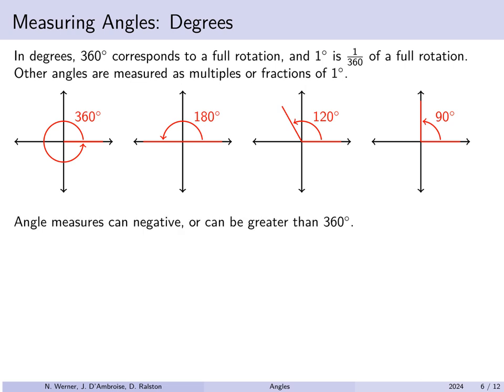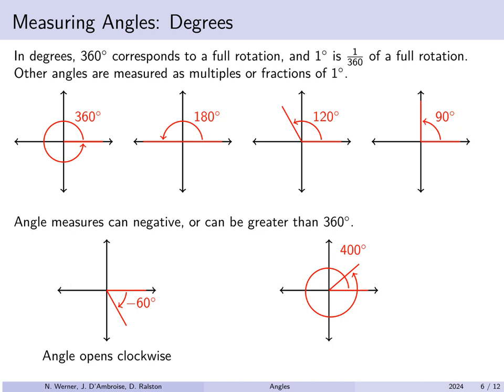Angle measures can also be negative or bigger than 360 degrees. For example, starting from the x-axis and rotating clockwise by 60 degrees gives negative 60 degrees — because the angle opens clockwise it is negative. On the other hand, rotating counterclockwise one complete rotation and then 40 more degrees gives a positive angle of 400 degrees: 360 for the complete rotation plus 40 more.